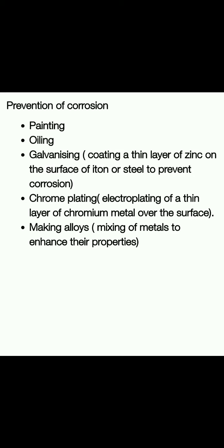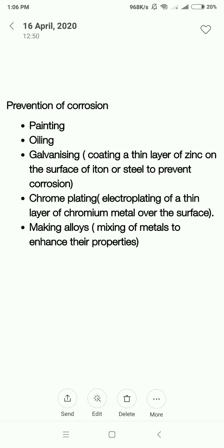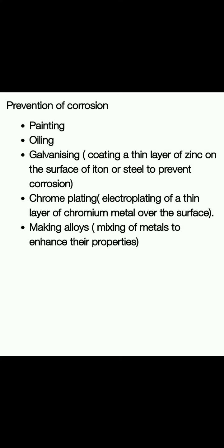The next method is galvanizing. Galvanizing is a special process — you have to remember it, it is important. In galvanizing, a layer of zinc is deposited on top of iron. This zinc layer means the iron will not come into direct contact with air or moisture. This process of coating one metal on top of another is known as electroplating, and when zinc is applied on iron articles it is known as galvanization.